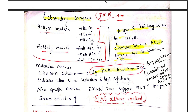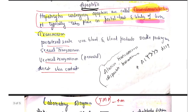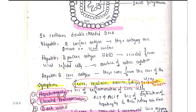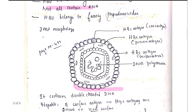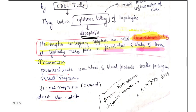Before moving on to the lab diagnosis, as I have already told you in the morphology part, the Hepatitis B virus contains the Hepatitis B core antigen, pre-core antigen, and Hepatitis B surface antigen. These are the antigens found in the Hepatitis B virus and are the main markers for identification of the infection.